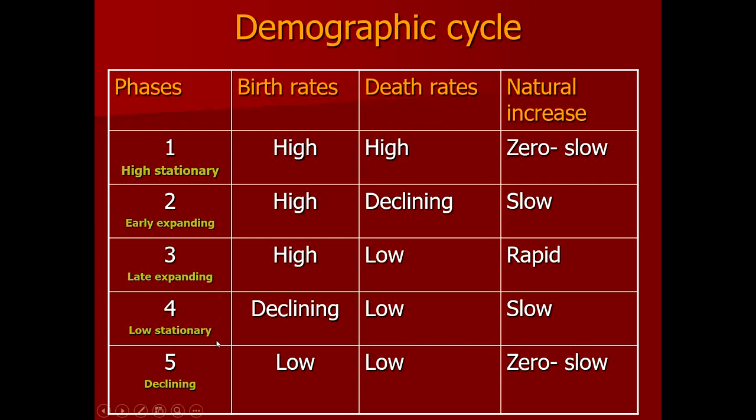The demographic cycle is described in five stages. Stage one, the high stationary phase, shows high birth rate, high death rate, and no natural increase. Stage two, early expanding, has high birth rates but declining death rates and slow population increase. Stage three, late expanding, has still high birth rates, low death rates, and a rapidly increasing population — known as population momentum.